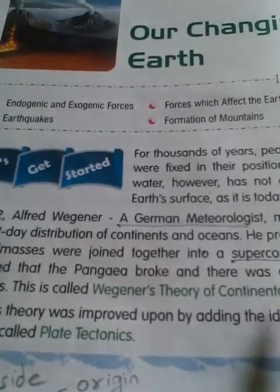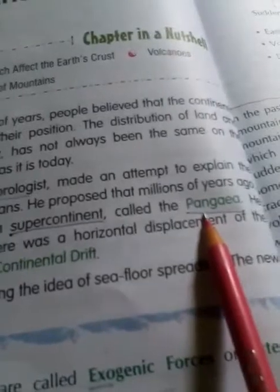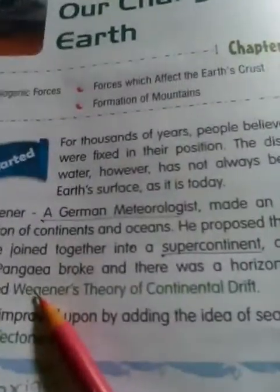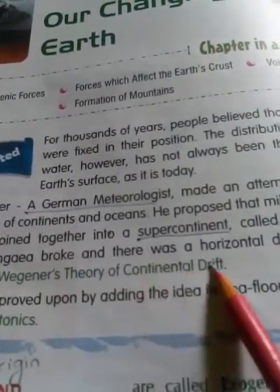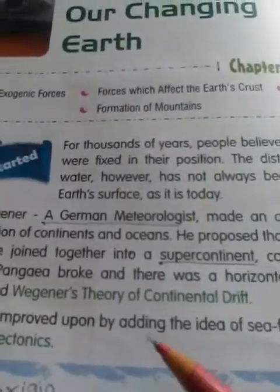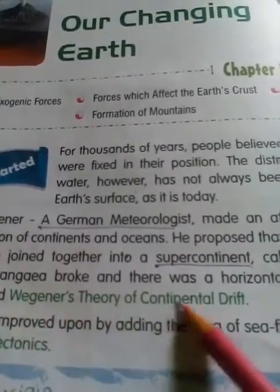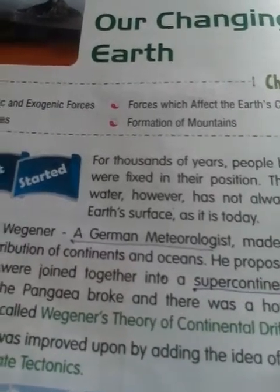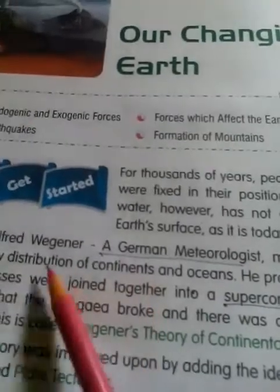He said that millions of years ago, there was only one continent. He named this supercontinent Pangaea. Pangaea was one very big landmass, and the smaller parts of the continent broke apart to form the countries and continents we know today. This was the key question Alfred Wegener addressed.